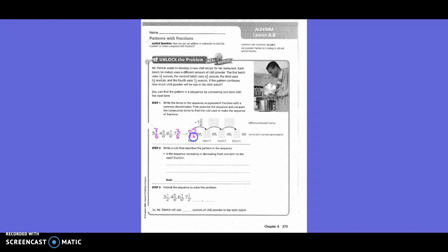Eight and five-sixths, and then eight and five-sixths plus one and two-sixths. You'd add the one and get nine and seven-sixths. But what would seven-sixths also be written as? One and one-sixth. So really you'd have ten and one-sixth.